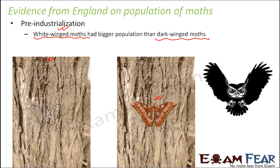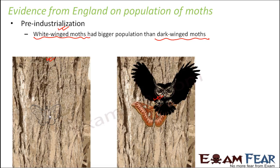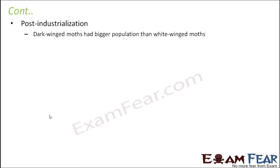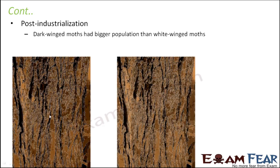Whenever an owl came in search of prey, it could easily find a dark-winged moth because it was clearly visible, but could not easily find the white-winged moth, as it blended with the background. As a result, the dark-winged moths were mostly caught and eaten by the owl, so their population reduced, while the white-winged moth population relatively increased.